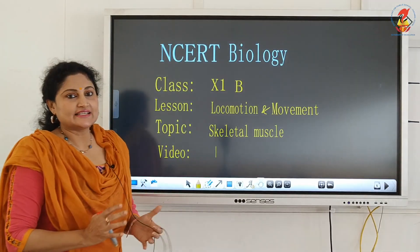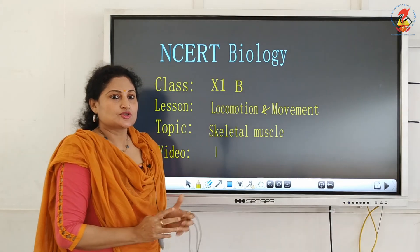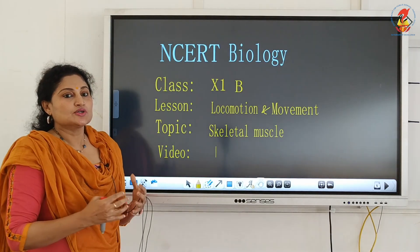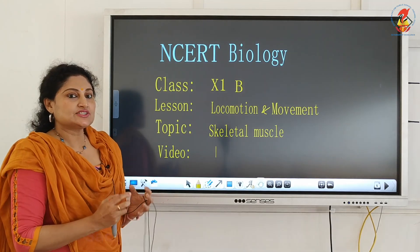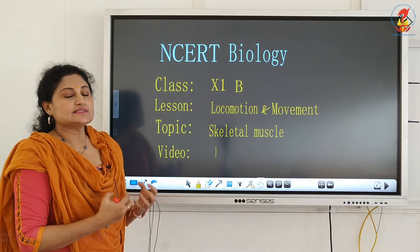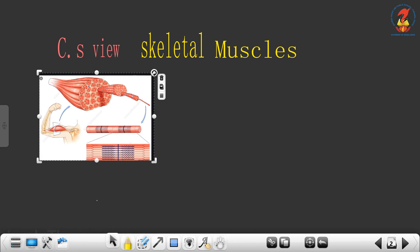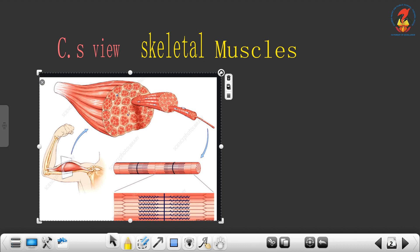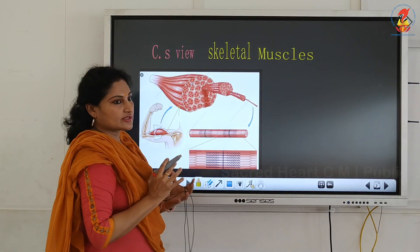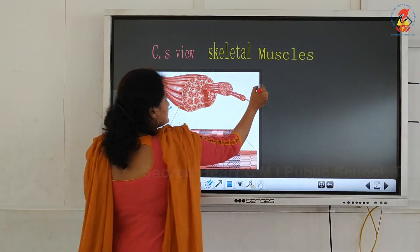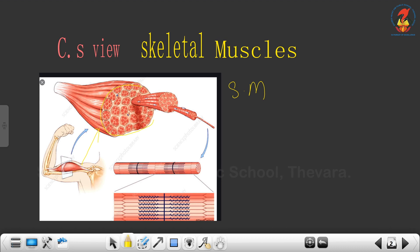Hello children. In this video we shall deal with the structure of the skeletal muscle. Let us go into the cross section of the skeletal muscles to zoom into the organization of the various muscle bundles and the skeletal muscle fibers. I have pulled out a cross section of the skeletal muscle. The skeletal muscles are connected with the bones, and this is the muscle arranged on the biceps. The skeletal muscle consists of a number of muscle bundles.